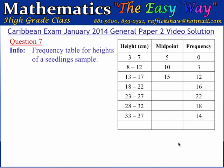We are now at question 7 of this CXC CSEC January 2014 general paper 2 exam video solution. In this question 7, we are told that the heights of a sample of seedlings were measured to the nearest centimeter and that the results were arranged in a frequency distribution table. This frequency distribution table is incomplete and we will be required to complete it later on in this question.